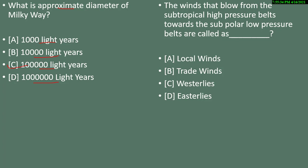Question 14: the wind that blows from the subtropical high pressure belt towards the subpolar low pressure belt — what is it called? Options are local winds, trade winds, westerlies, or easterlies. The correct answer is option C — westerlies.